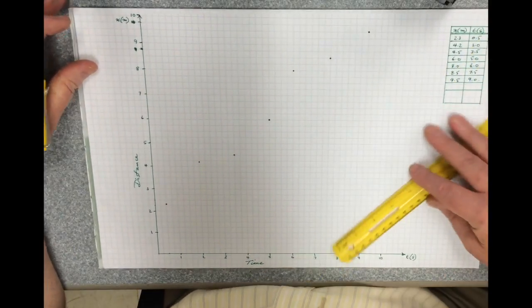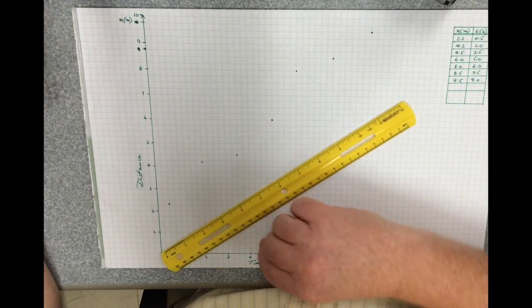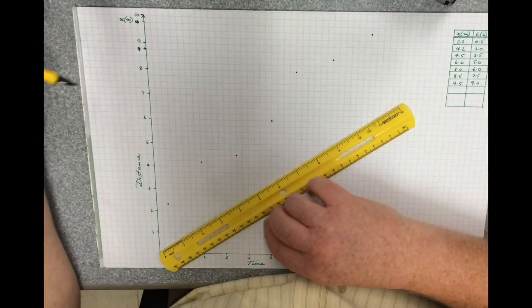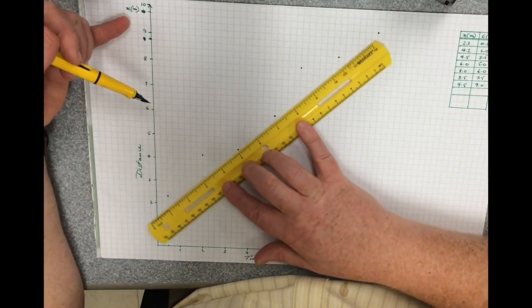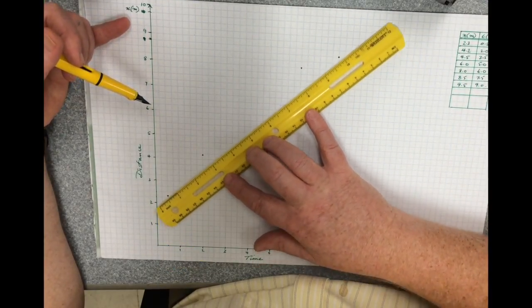When I look at this graph, I can see a significant scatter, but the trend looks like it's linear.